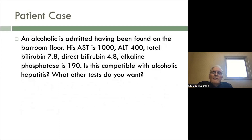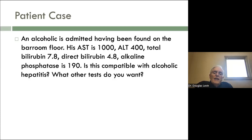Case three: an alcoholic admitted having been found on the barroom floor. His AST is 1,000, ALT 400, total bilirubin 7.8, direct bilirubin 4.8, alkaline phosphatase 90. Is this compatible with alcoholic hepatitis? The point is that AST of 1,000 — you don't see that in alcoholic liver disease; generally you don't see levels above 400. The most likely thing is muscle injury from being unconscious on the barroom floor. This is a myopathy due to compression rather than actual liver injury. You very well may have alcoholic hepatitis too, but you want to check CK to see what his muscles are doing. That's likely to be the source of the high AST in this particular person.